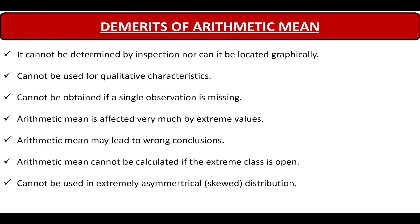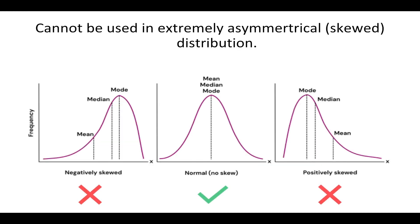And it cannot be used in extremely asymmetrical or skewed distribution. You can see that in the skewed distribution, that is the one on the extreme right and left, negatively skewed and positively skewed. You can easily make out that mean will not be the correct reference. In both these cases, we will have to use median. Whereas, in case of normal distribution, we can use mean. This is what is meant by mean cannot be used in extremely asymmetrical distribution.